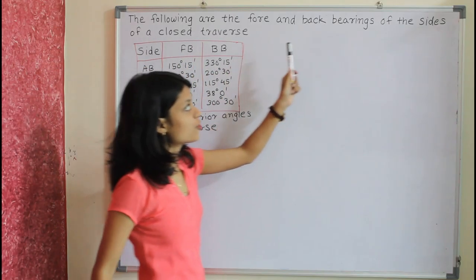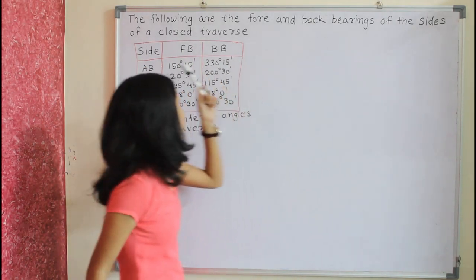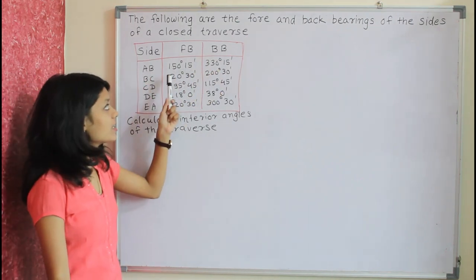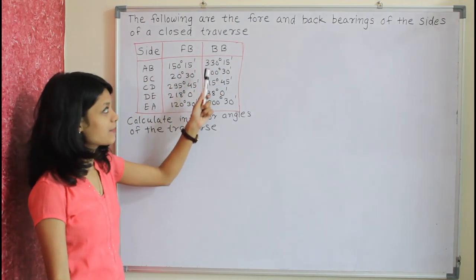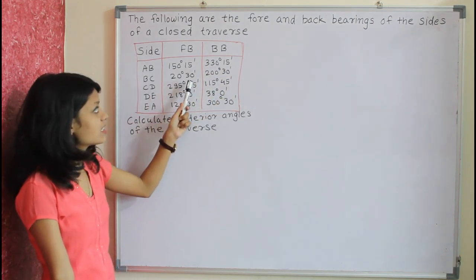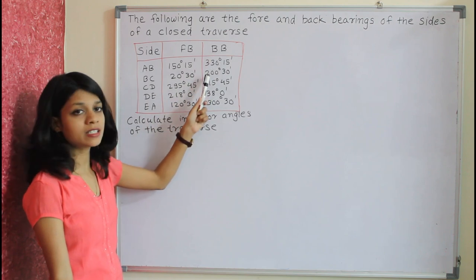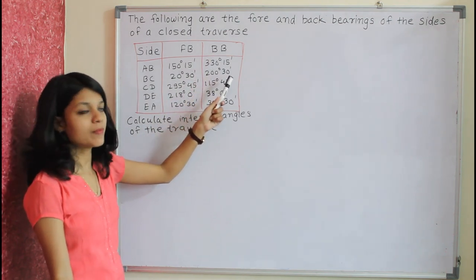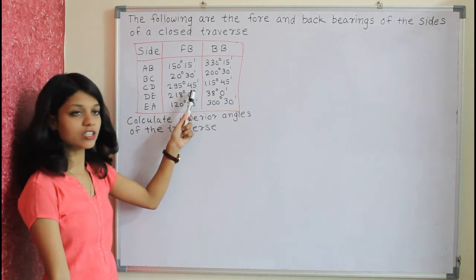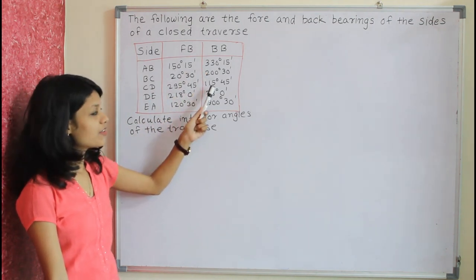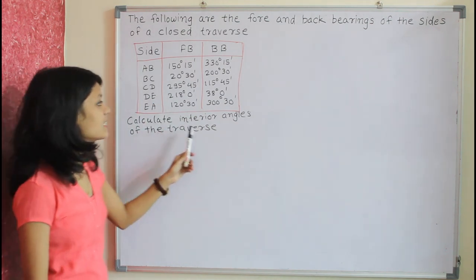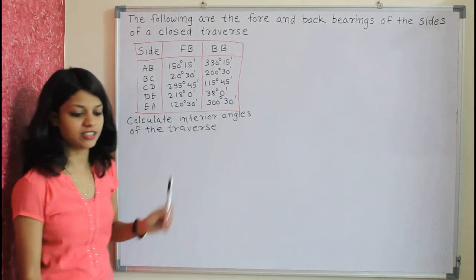The following are the fore and back bearings of the sides of a closed traverse. Side AB: fore bearing 150°15', back bearing 330°15'. Line BC: fore bearing 20°30', back bearing 200°30'. Side CD: fore bearing 295°45', back bearing 115°45'. Calculate the interior angles of the traverse.